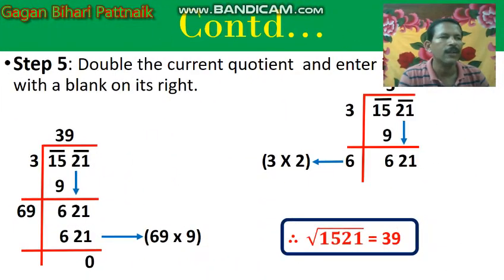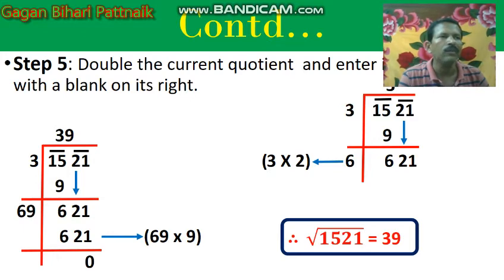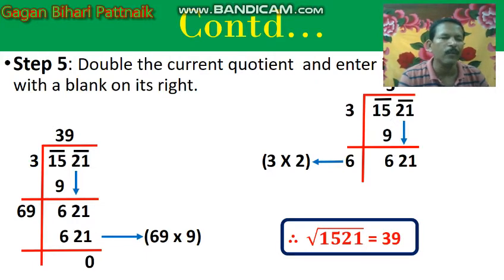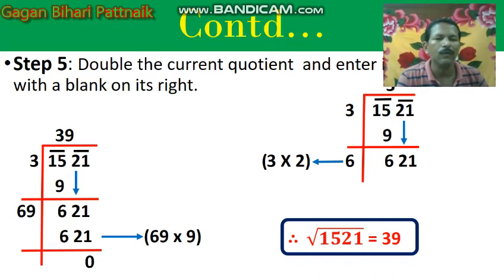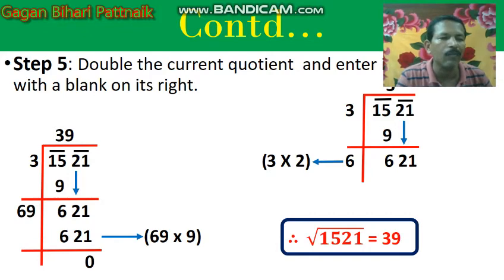Then step number 5: double the current quotient. Your quotient is 3. Now you will double the current quotient — 3 multiplied by 2 equals 6. You will write 6 here, and to the right of 6, after 6, you will write a new number. Which number will you write? Think. And whichever number you write, you will multiply by that number.